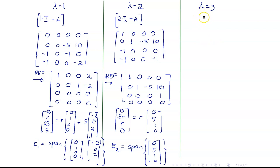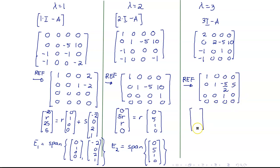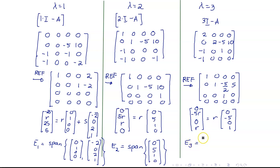For lambda equals 3, we form 3I minus A and transform to REF. We have a non-pivot column, so x4 is a free variable equal to r. From the third row, x3 equals 0; from the second row, x2 equals negative 5x4 equals negative 5r; and from the first row, x1 equals 0. So the eigenspace of A corresponding to eigenvalue 3 is the span of [0, negative 5, 0, 1].